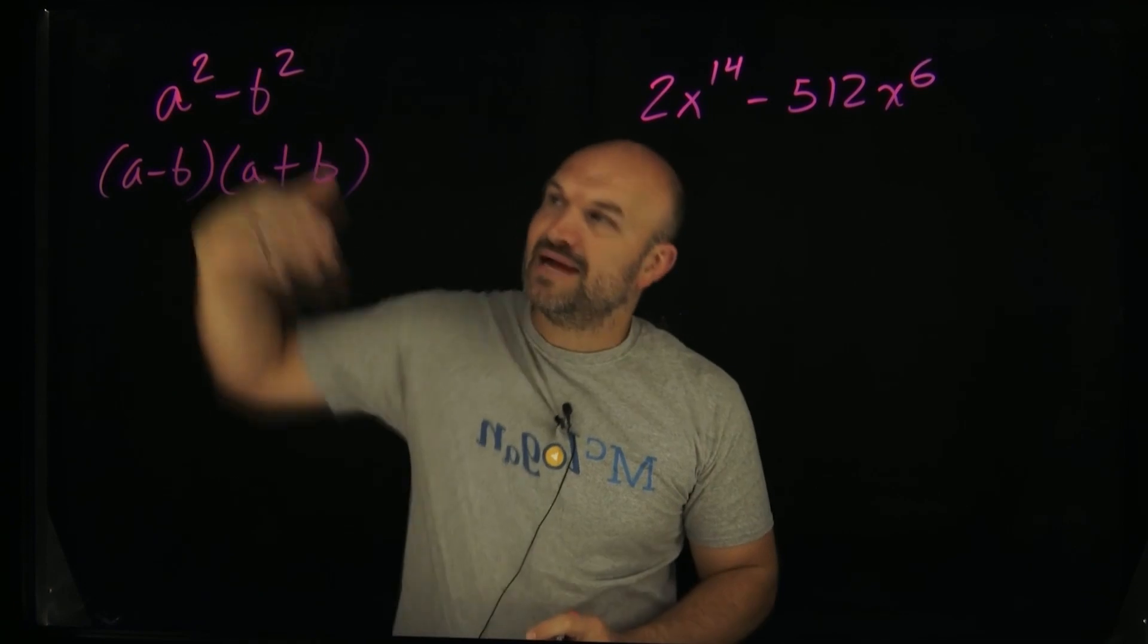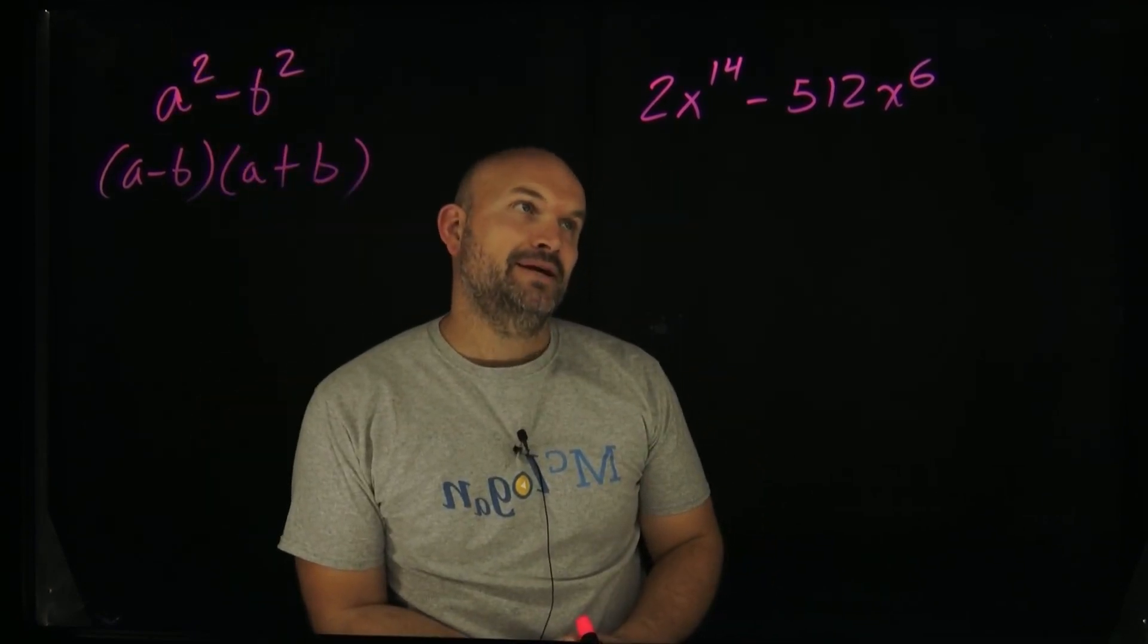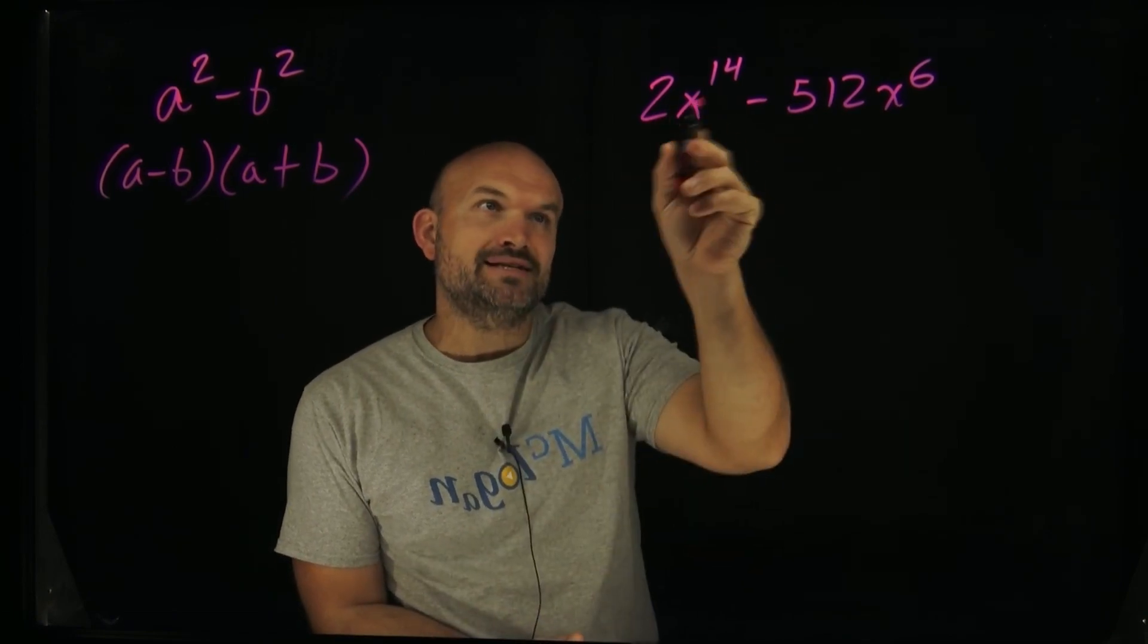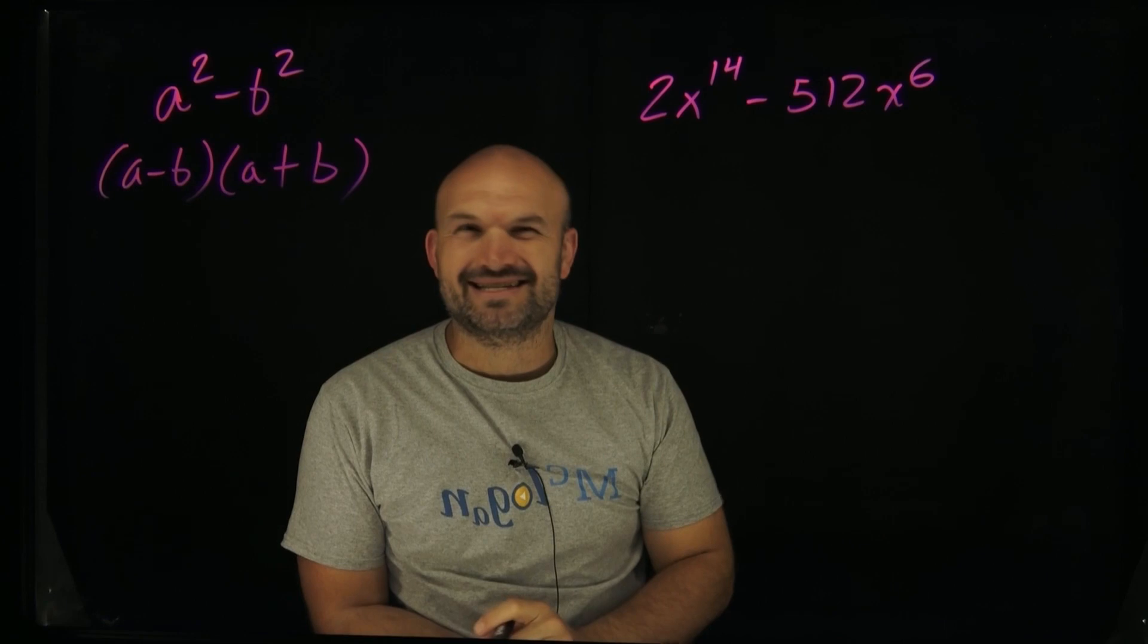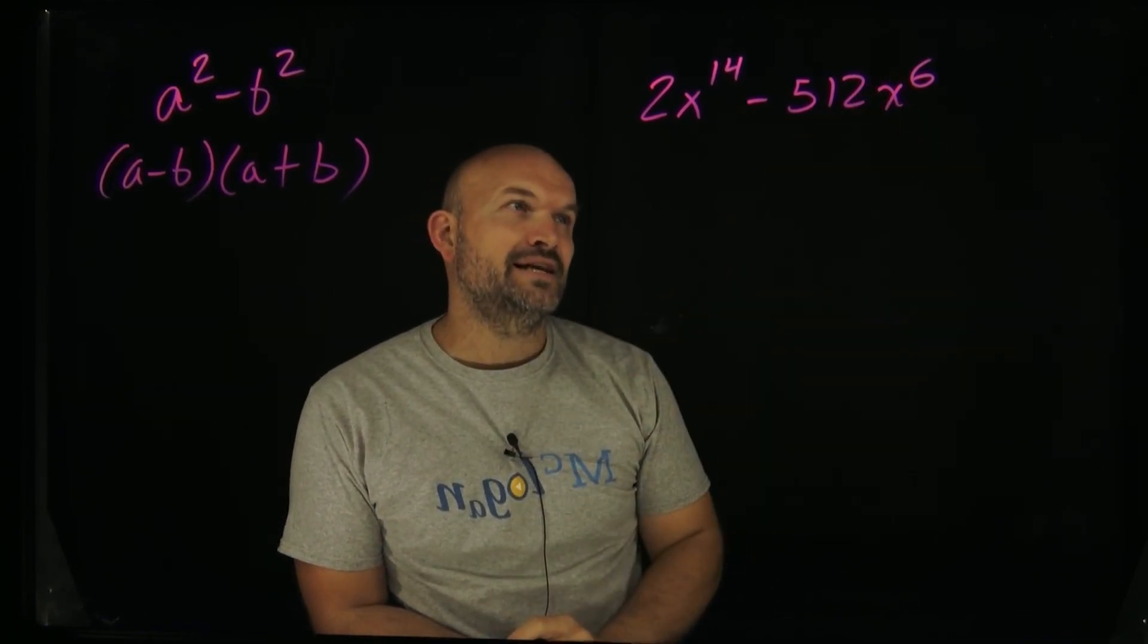The main idea is we have to have a square term minus another square term. And the problem here is I can't really rewrite 2 as a square number. Like I could rewrite the x to the 14th as a square number, like x to the 7th squared, that'd be x to the 14th. And I can do the same thing for x to the 6th.